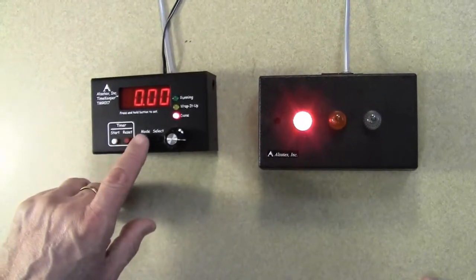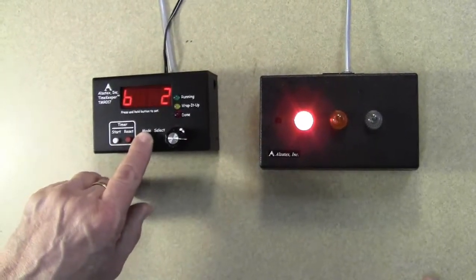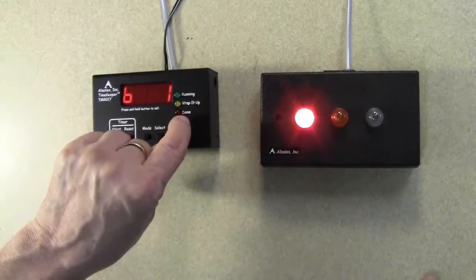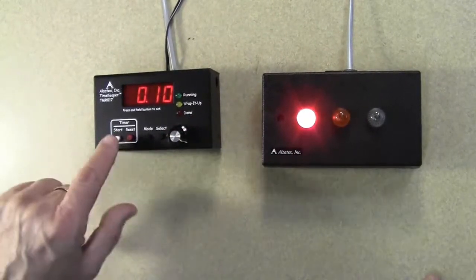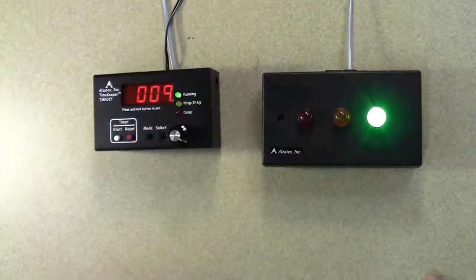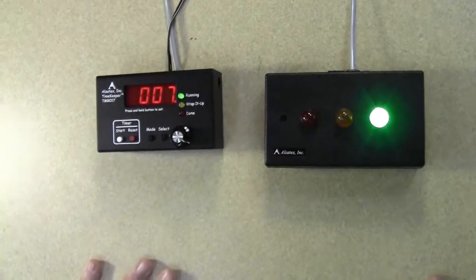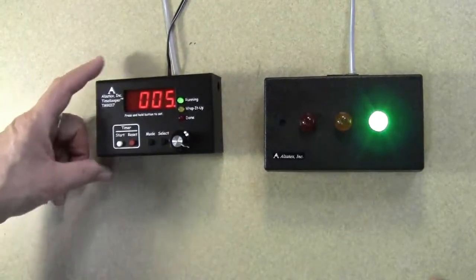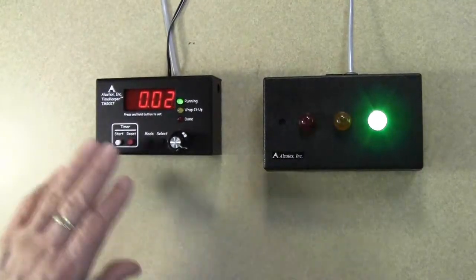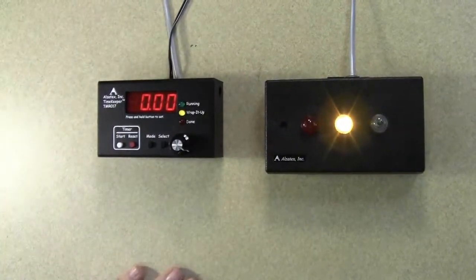So I'm going to press the mode button again, and hold it. Turn it back to B1. Press reset, start, and we're back to the normal countdown beep. So that covers the operation of the TMR017 along with the RYG11.